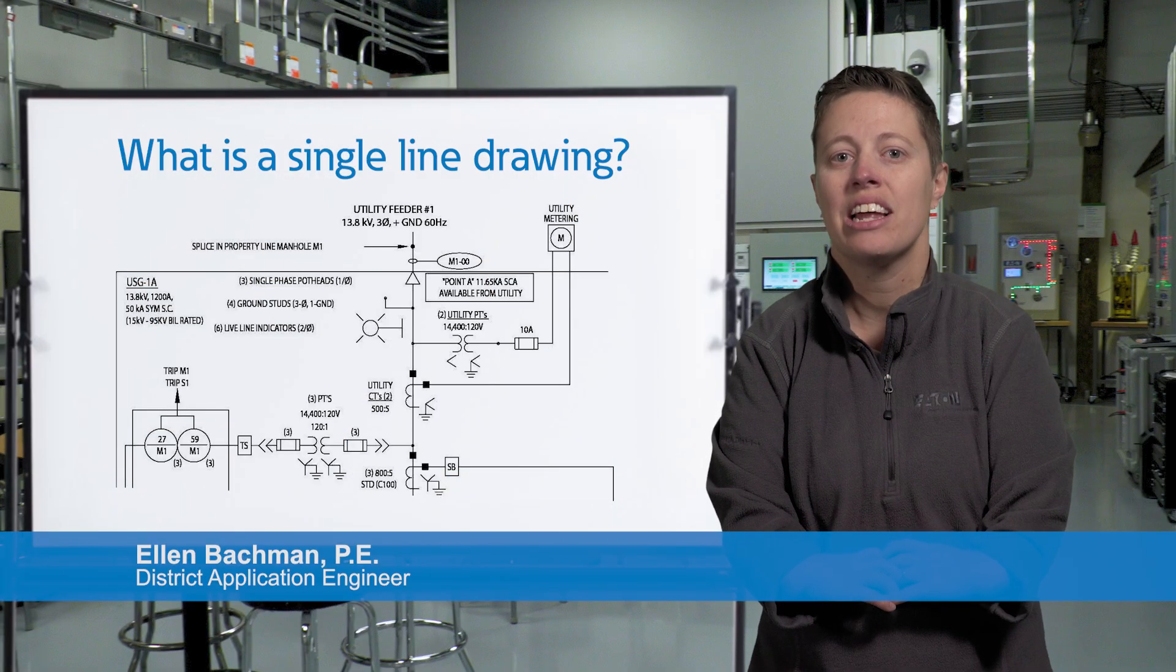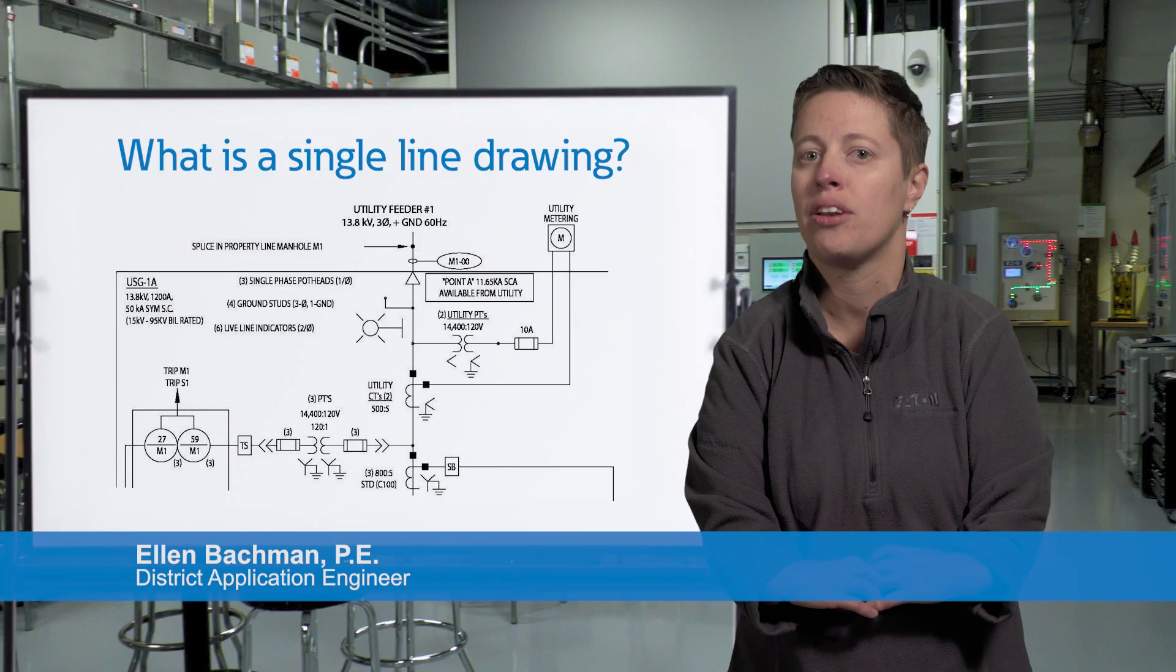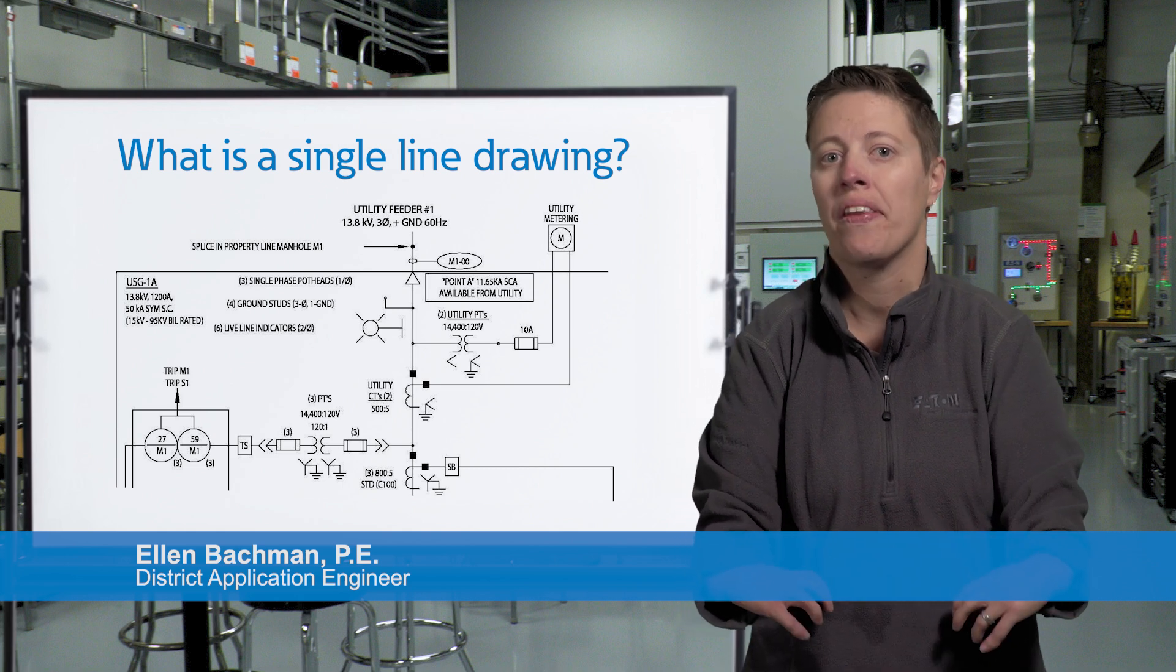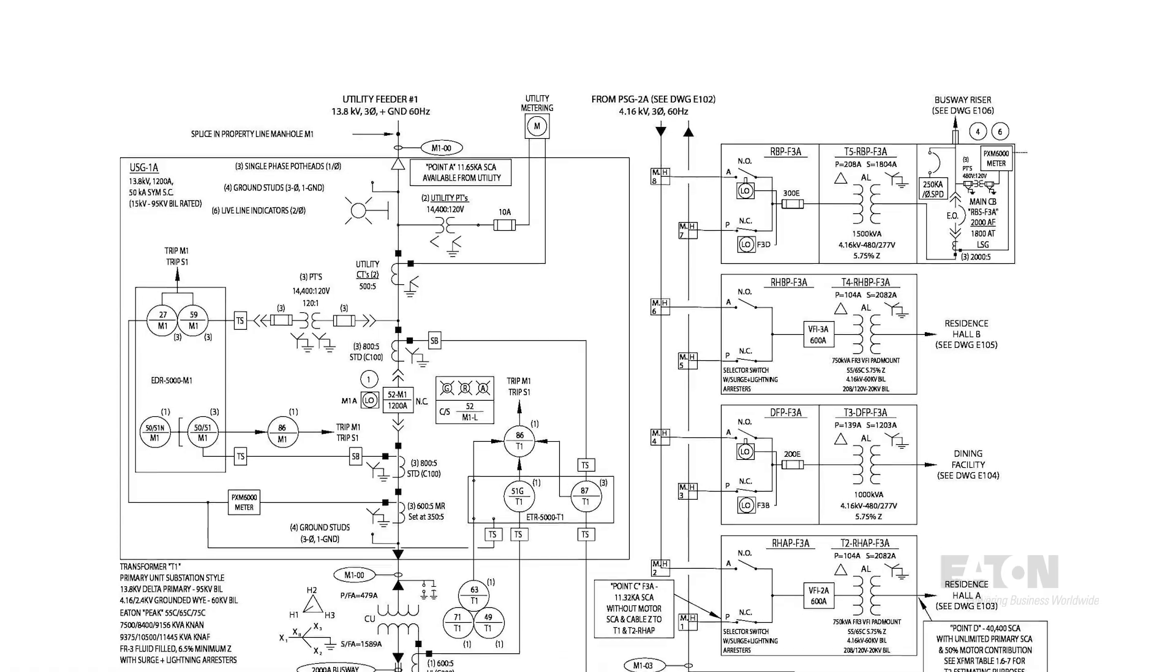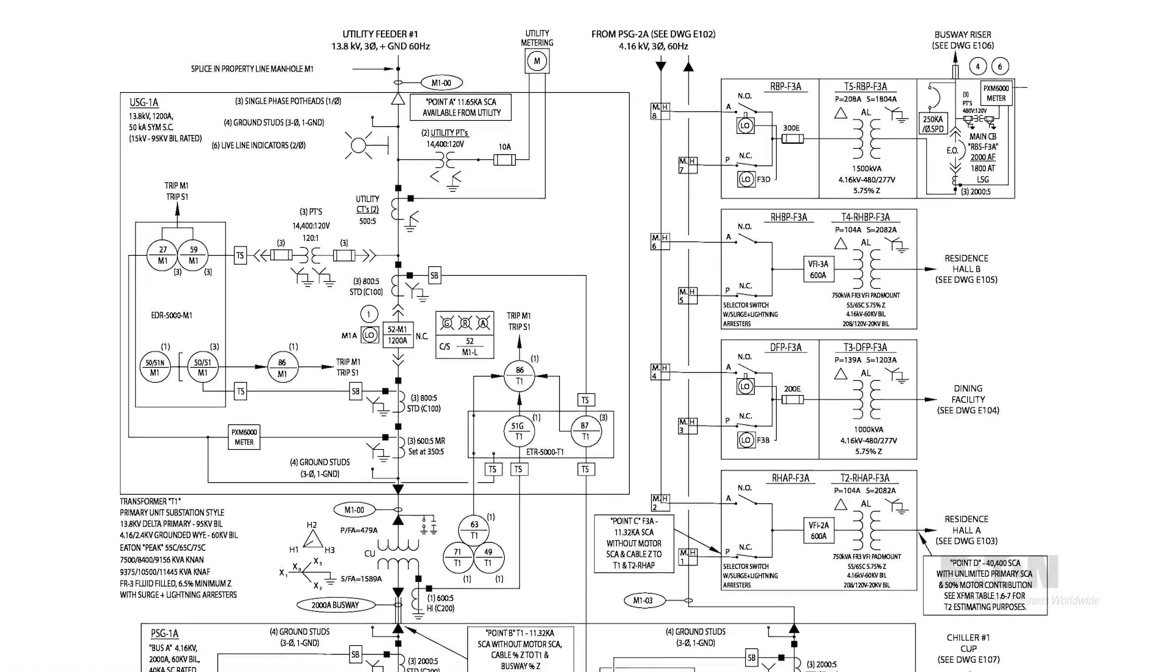The key to understanding any electrical system is the single line drawing, also called a one line drawing or single line diagram. This drawing takes all three phases of power and all equipment in the system and simplifies the power flow into one easy to understand drawing.